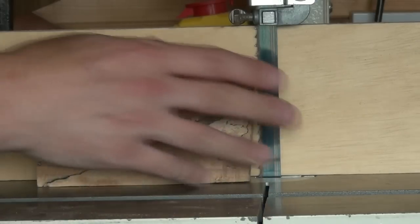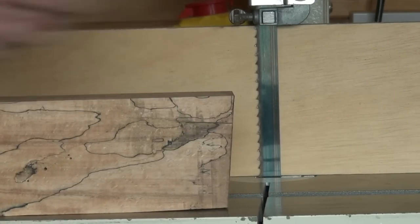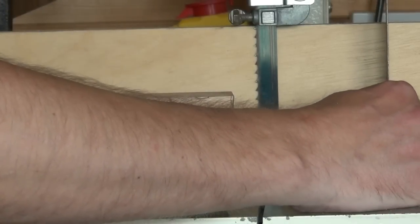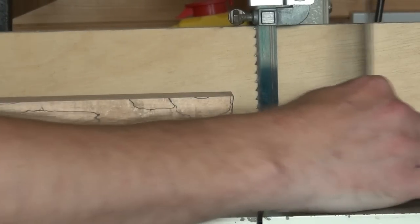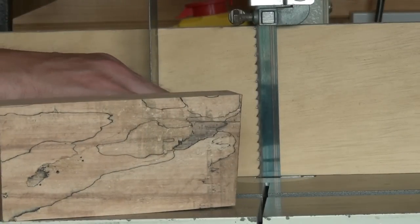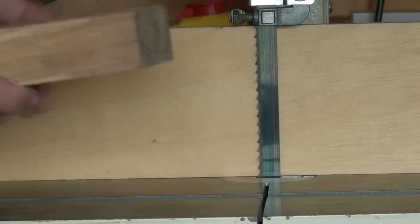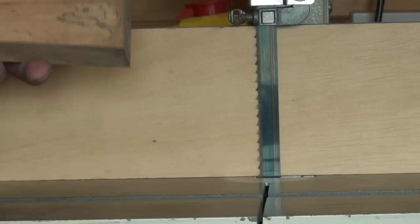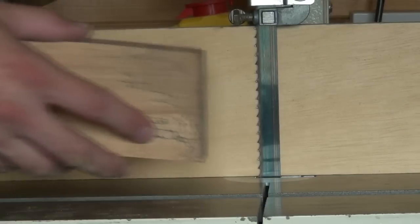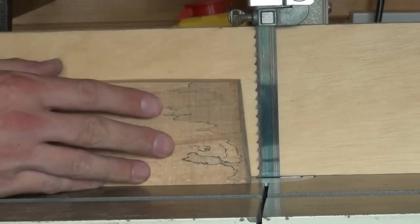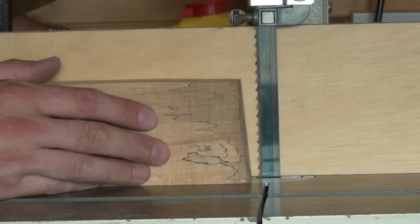Set your fence to the width of the veneer you're hoping to achieve. Check that the auxiliary fence is perpendicular to the table. Plane the edge of your stock first of all on one side—that will be the top side of your finished veneer. And then cut with a slow rate of feed.